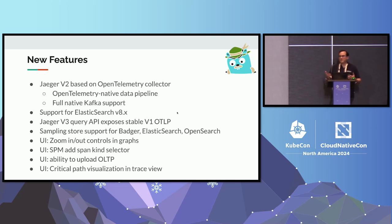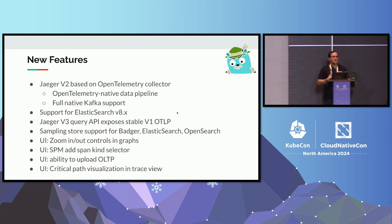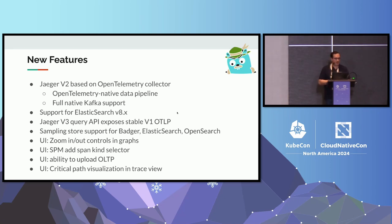When you are using OpenTelemetry to collect logs, metrics, and traces from your application, Jaeger now has a very similar configuration, similar technology and capabilities underneath. It also lets us leverage the community around OpenTelemetry to get better sampling, better support for Kafka, and we have support for new backends in terms of storing the data.